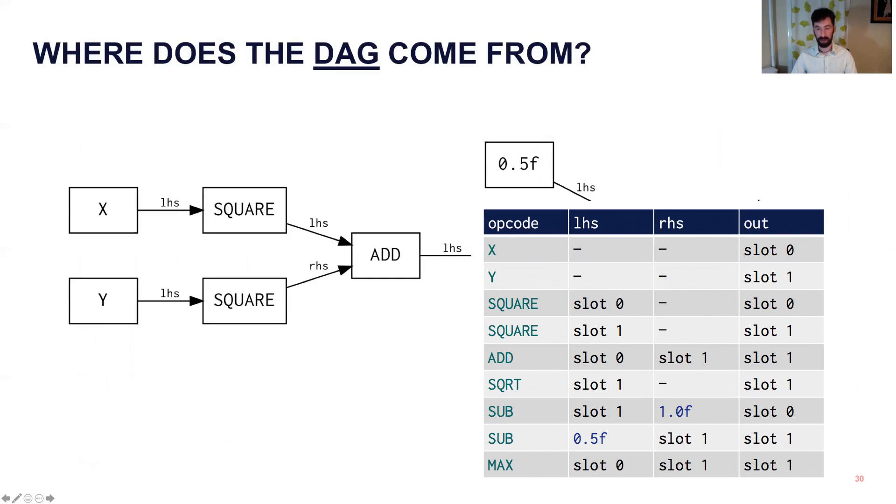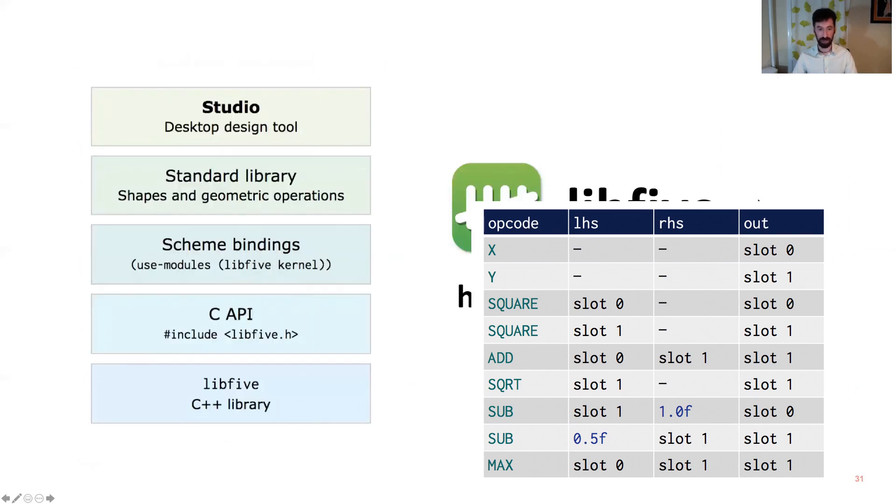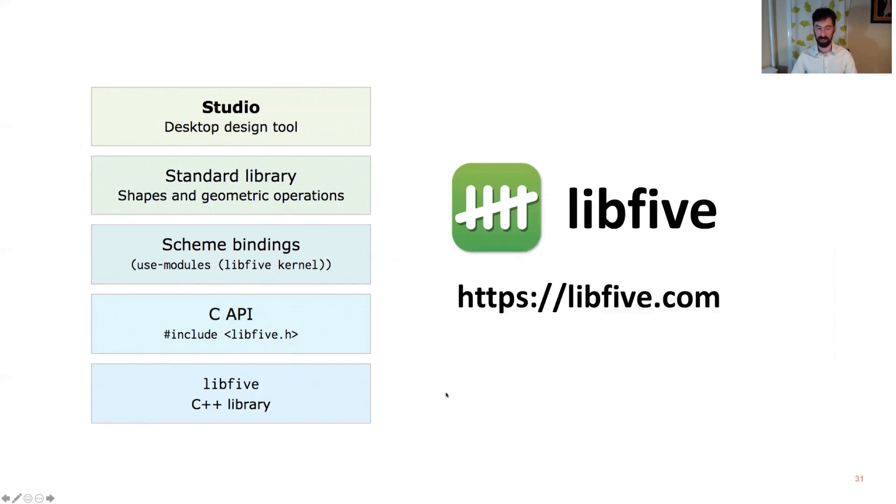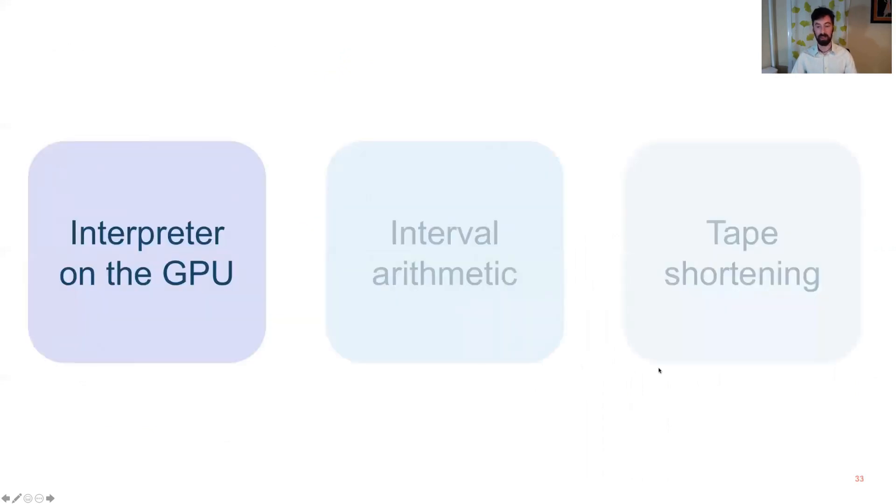The DAG, you might ask where that comes from as well, and the answer is this is now beyond the scope of the paper, where I built a library called lib5 previously, which is specifically for manipulating these kinds of equations. So if you use this, you get a standard library of shapes and you get the DAG generation for free. So that's the first building block.